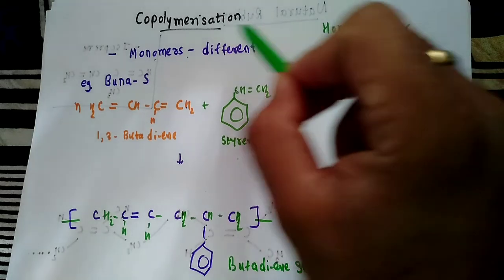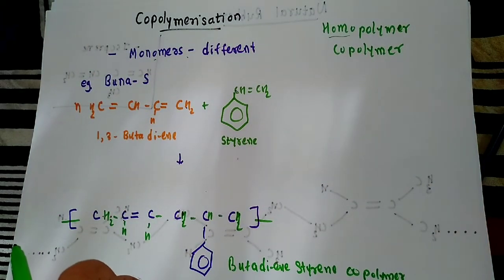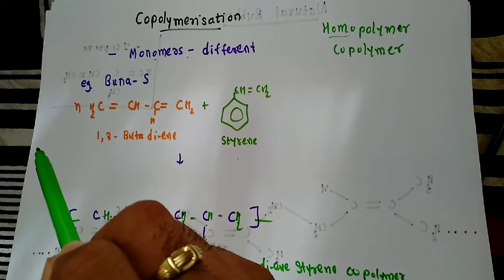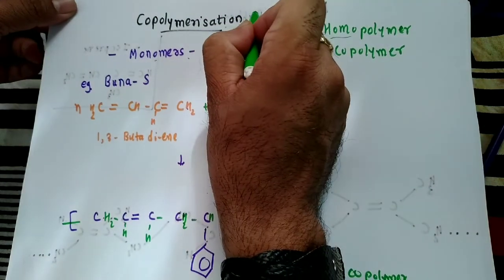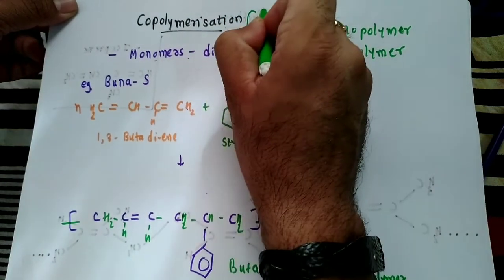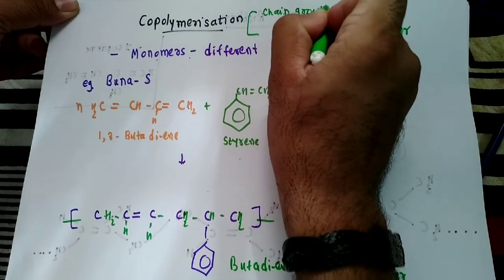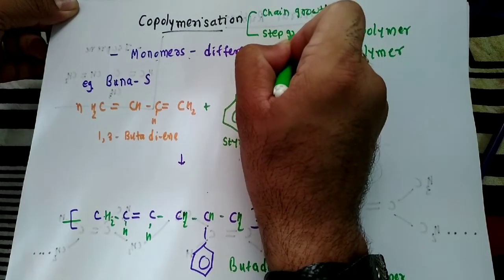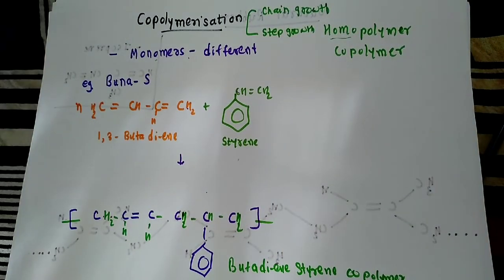Co-polymerization is a polymerization reaction in which a mixture of more than one monomer species is allowed to polymerize and form a co-polymer. The co-polymer can be made not only by chain growth polymerization but also by step growth polymerization. Both chain growth and step growth polymerization are possible in this case.